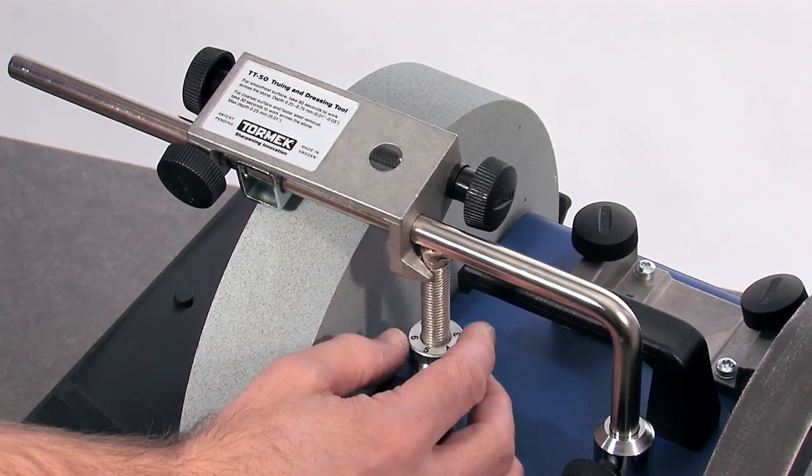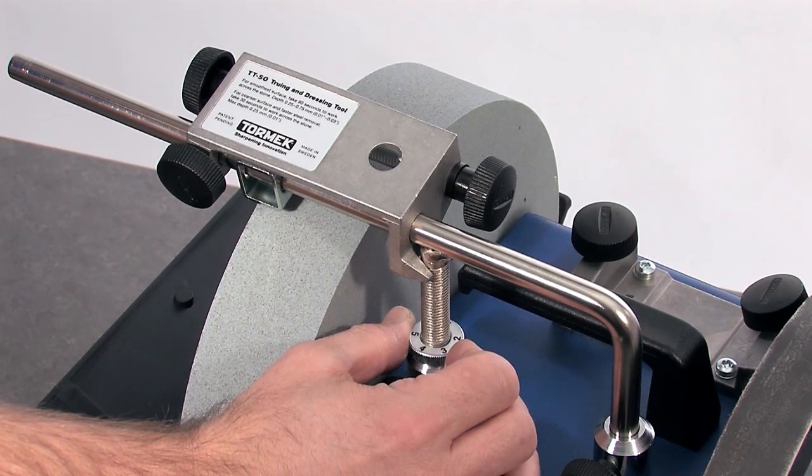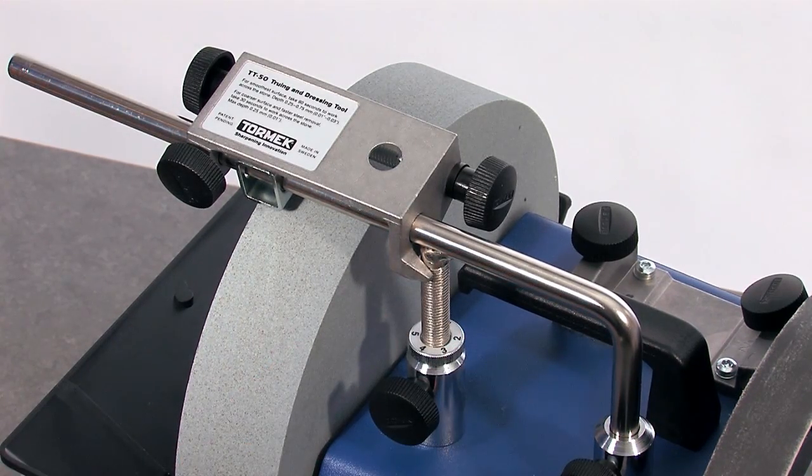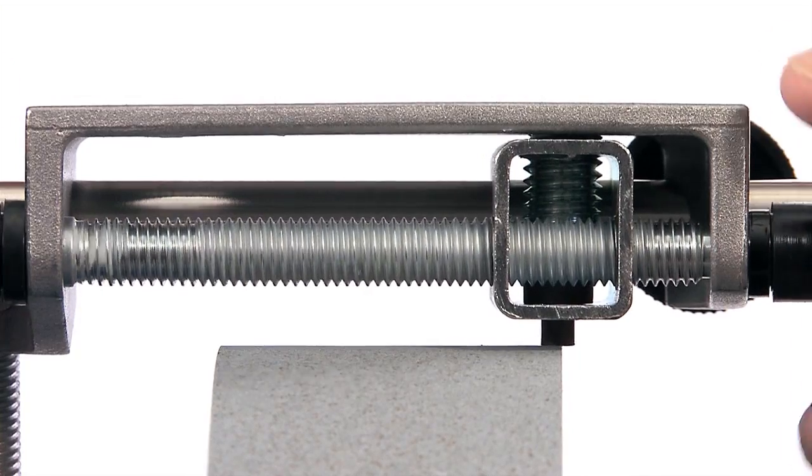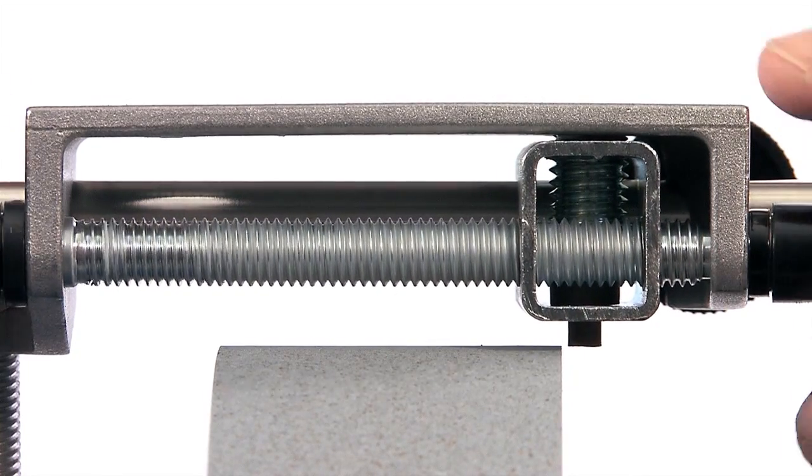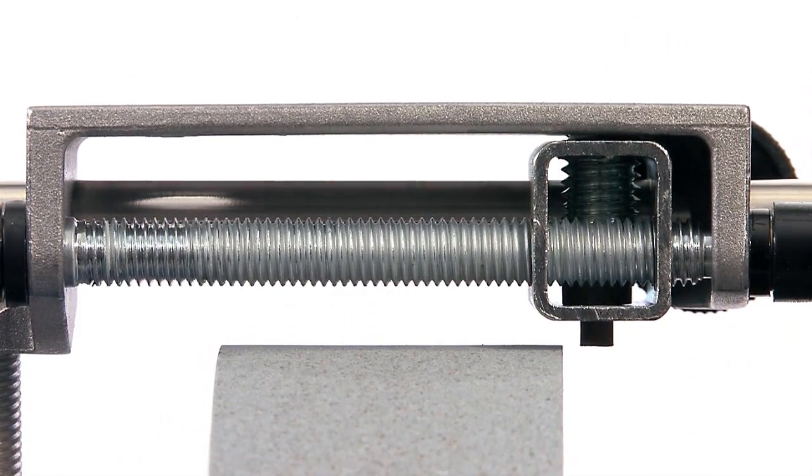Spin the micro-adjust down to the bottom and then a touch more, just enough to lift the cutting tip off the stone surface. Move the cutting tip to the outside of the stone so that you can start working inwards.